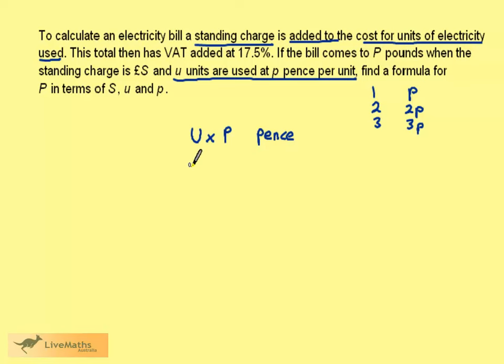We need this to be in pounds since the formula is in pounds. If we divide U times p by 100, this will now be in pounds. Think about this: one hundred pence is equal to one pound, so dividing the number of pence by 100 converts to pounds.